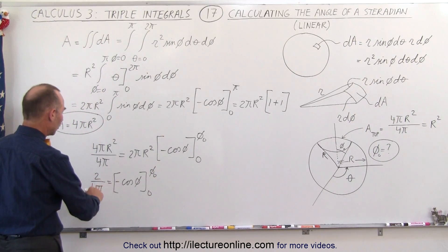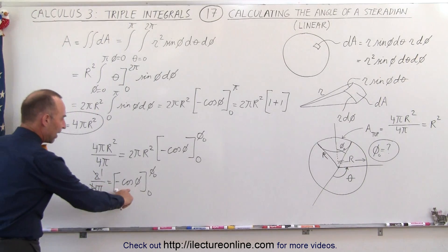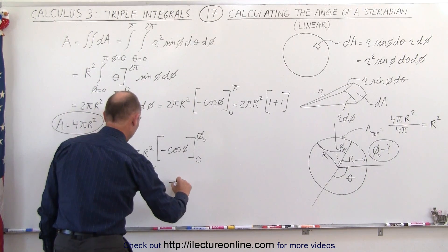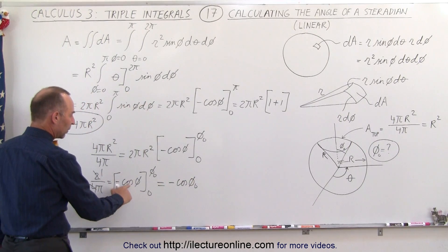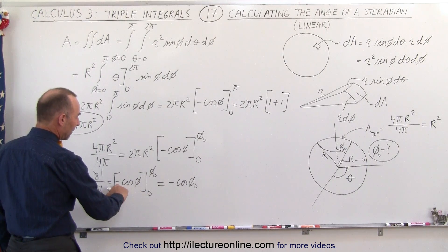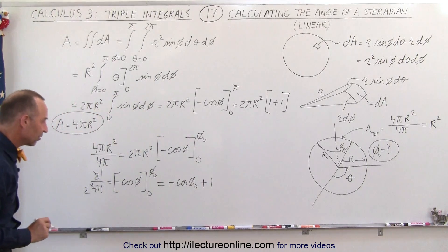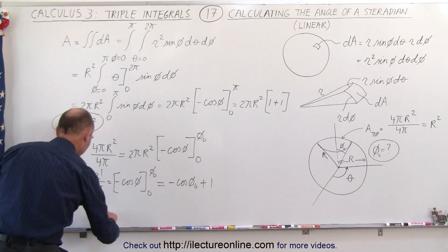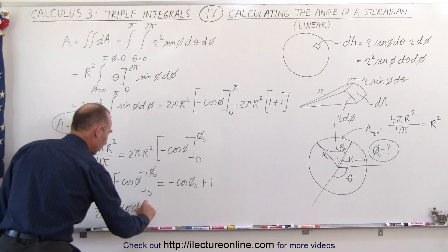When we evaluate the right side: plugging in the upper limit gives minus cosφ₀, then plugging in the lower limit gives cosine of 0, which is 1. We subtract that, but with the negative sign we get plus 1. We have to be careful with the signs here. So now we have 1/(2π) equals minus cosφ₀ plus 1.